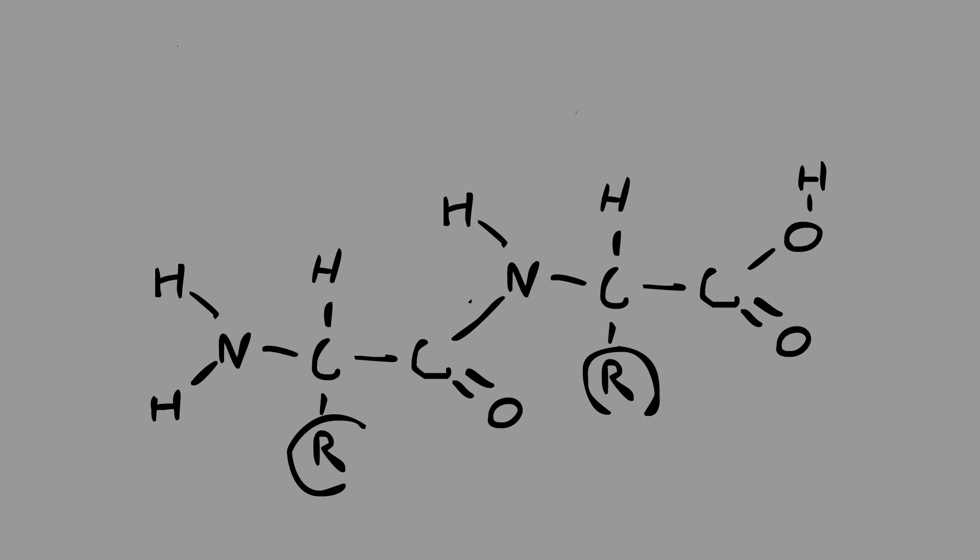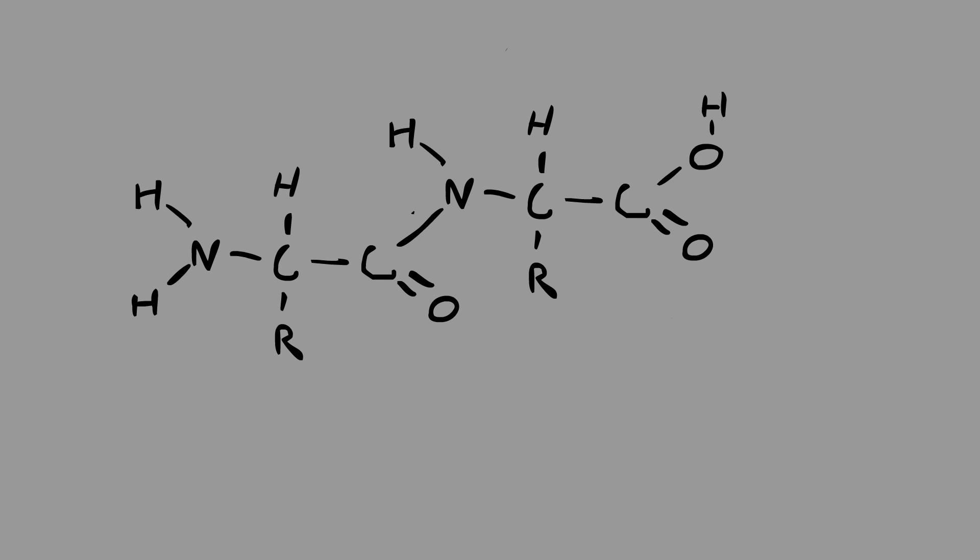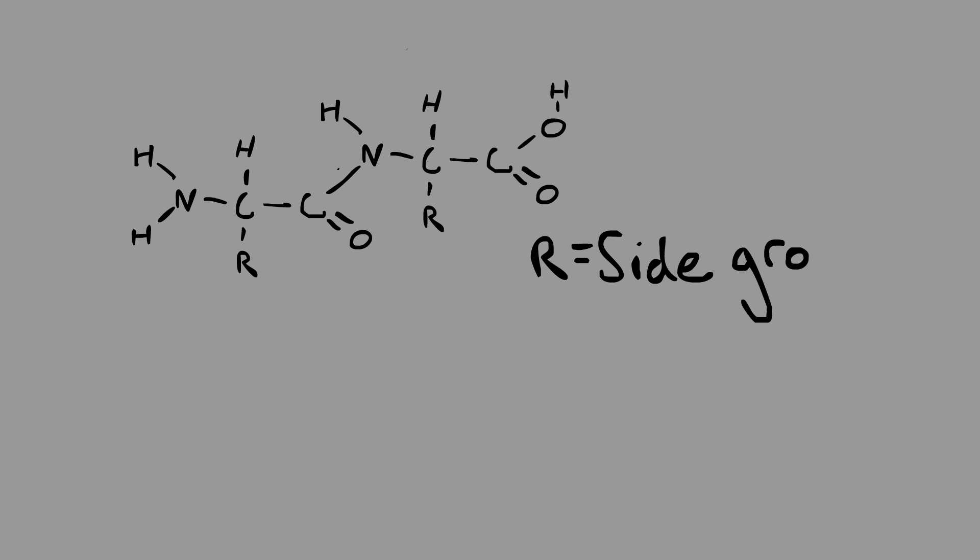Amino acids have what is known as an R group. This is sort of the wild card and can almost be anything. An analogy might be to think of the R group as changing the flavour of the amino acid.